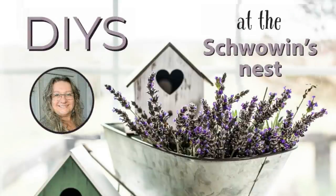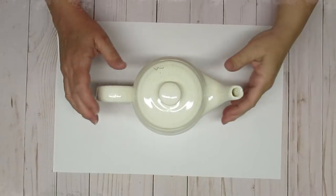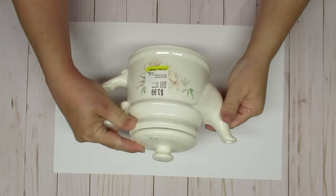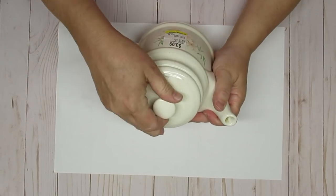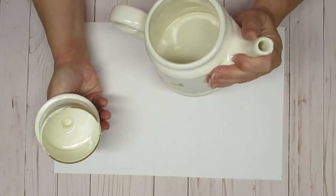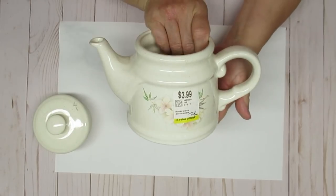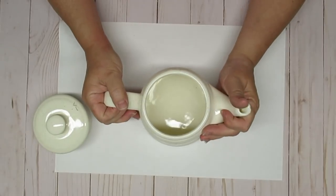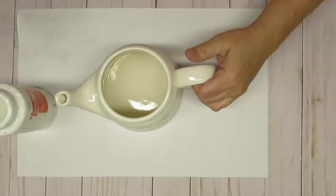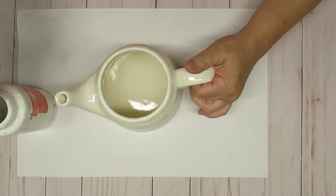Hi there, Sandra here from the Shvovins Nest. Thanks for joining me today. My first project is using this little teapot that I picked up for $3.99 at the thrift store. It's cute the way it is. It's sort of an off-white color with some little patterns and florals, but of course it's still not farmhouse enough for me.